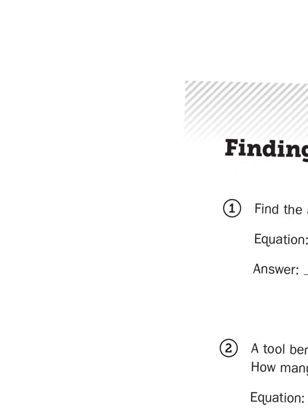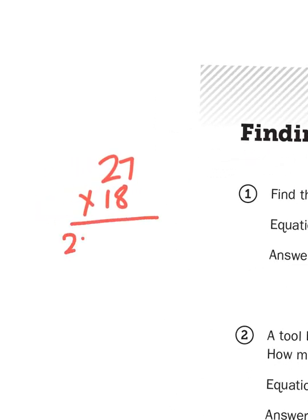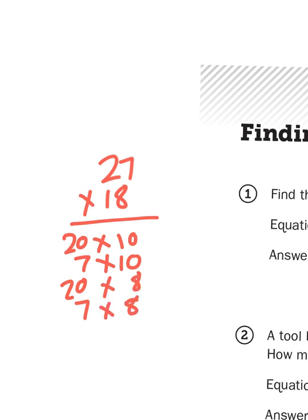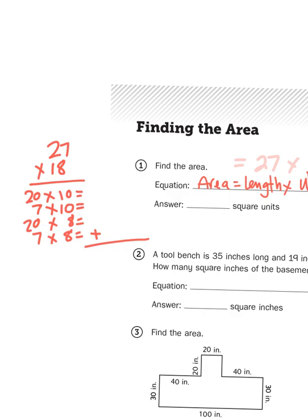And you can set up that problem one of two ways. I'm going to choose partial products. 27 times 18 is built from 2 tens and 7 ones. So I multiply 2 tens times the 10 in 18, and I multiply the 7 times the 10 in 18. Then I'm going to do the same again with the 8 in the 1 place value. 20 times 8 and 7 times 8. And then I would add all four of those partial products to get my total product. And that total product would be your area. But that's not the focus I want to take today.